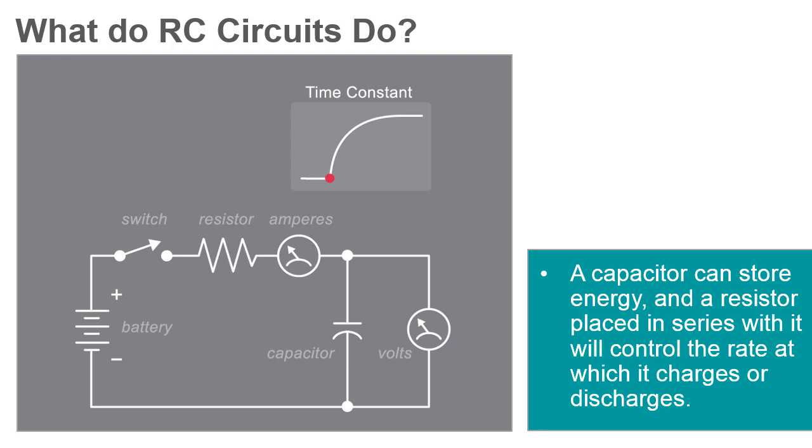A capacitor can store energy, and a resistor placed in series with it will control the rate at which it charges or discharges. This produces a characteristic time dependence that turns out to be exponential.